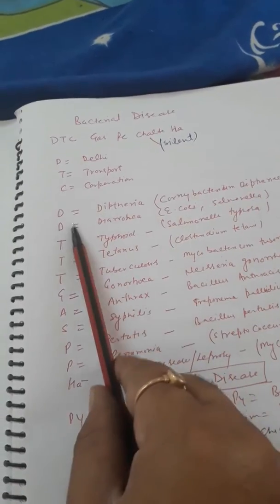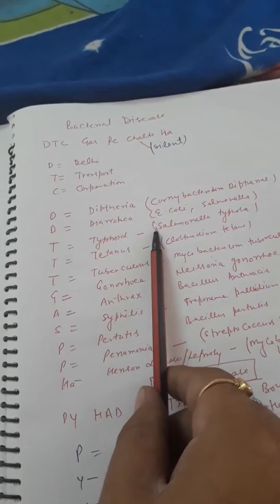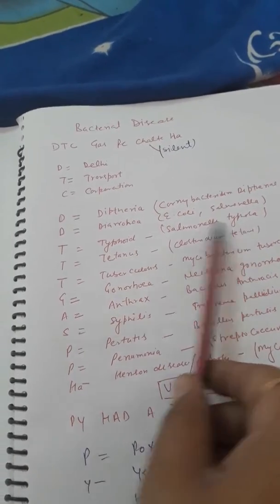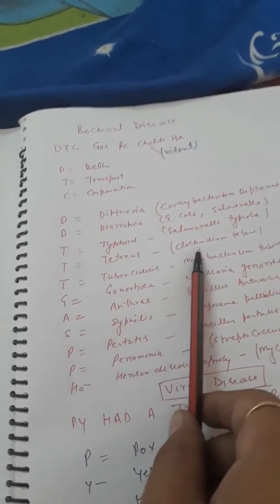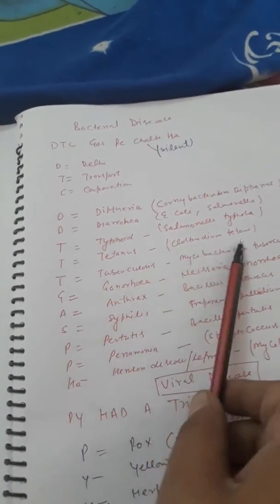Phir aapka T - T for Typhoid. Typhoid joh karta hai woh bacteria cause karta hai Salmonella typhi. Aur T joh aapka Tetanus, Clostridium tetani. T se aapka Tetanus, Clostridium tetanus. T se Tuberculosis aur Tuberculosis joh hota hai woh bacteria cause kaun karta hai? Mycobacterium tuberculosis.